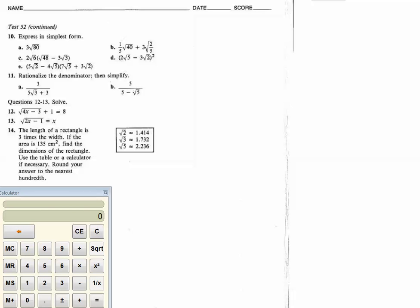Here's number 11. I'm going to do 11a and b, then I'll do one video for the last three. So, we have 3 over 5 root 3 plus 3. And we need to rationalize. That means we need to get the square root out of the denominator.